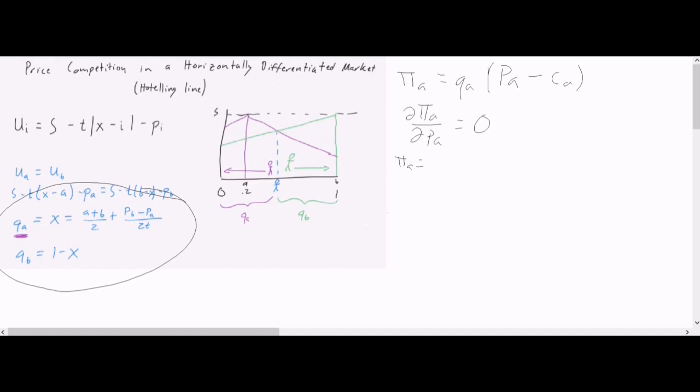Let's get more explicit about this. Profit for firm A is equal to the quantity, which is A plus B over 2 plus PB minus PA over 2T. So there's my quantity. And then price for firm A minus cost for firm A. So we will take the derivative of profit for firm A with respect to price for firm A. And if you're rusty on your calculus, we're going to need our product rule and our power rule. See the links up in the corner for details, or videos that can help you.